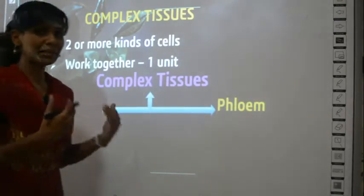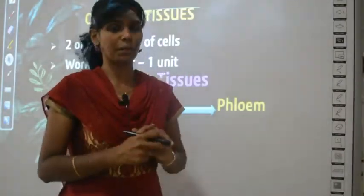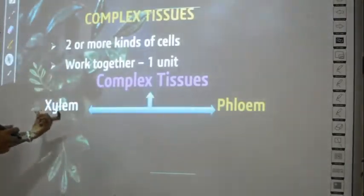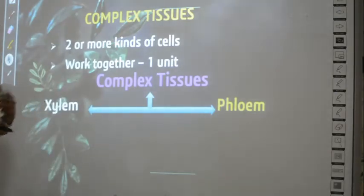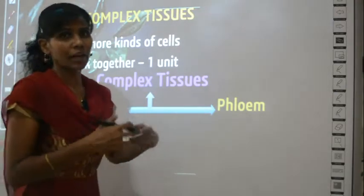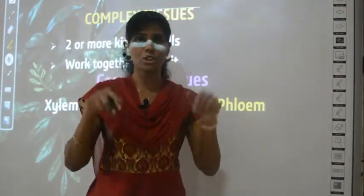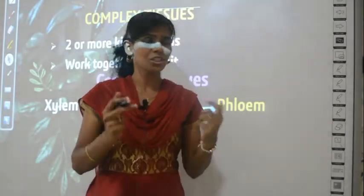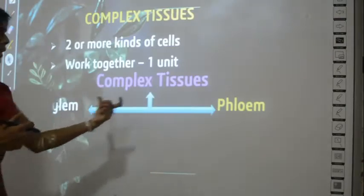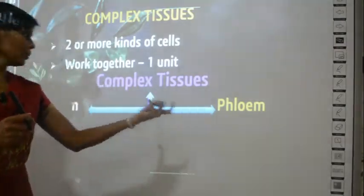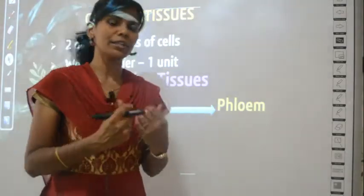In a plant there are two main complex tissues: one is called xylem and the other is called phloem. These are the two types of complex tissues. If you remember the chart from the previous class, I mentioned that complex tissues include xylem and phloem. Now we are going to learn the structure of xylem and phloem in detail.